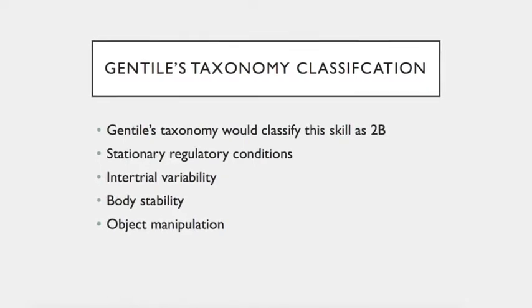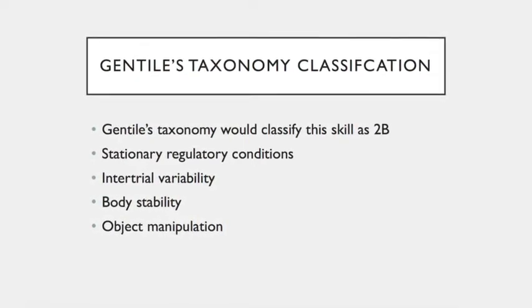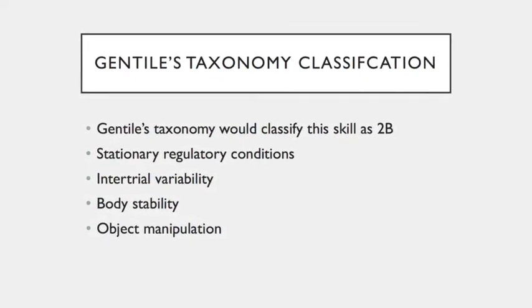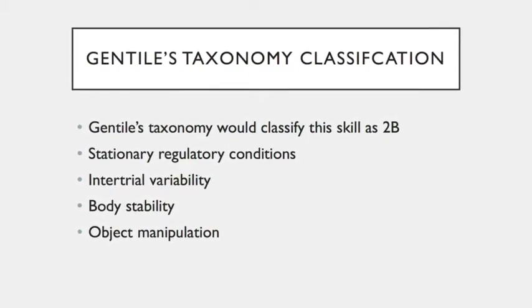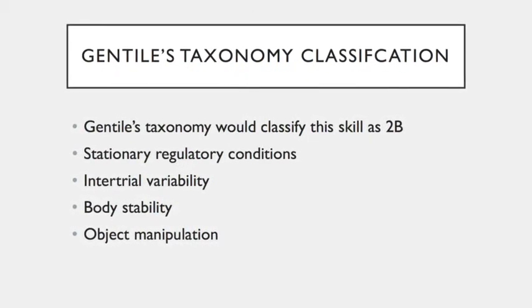Gentile's taxonomy would classify this skill as 2B, meaning stationary regulatory conditions, inter-trial variability, body stability, and object manipulation.